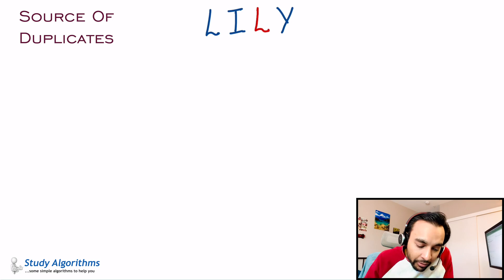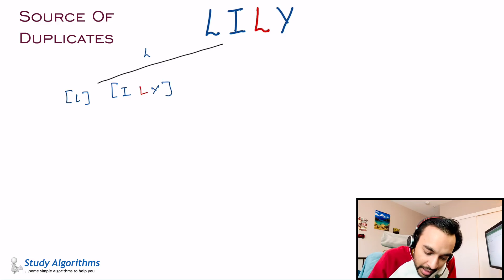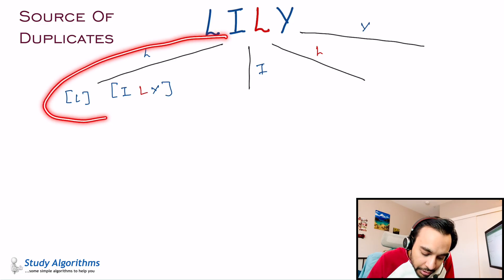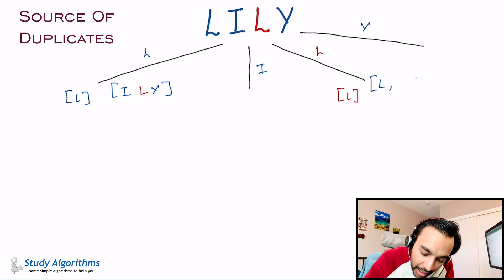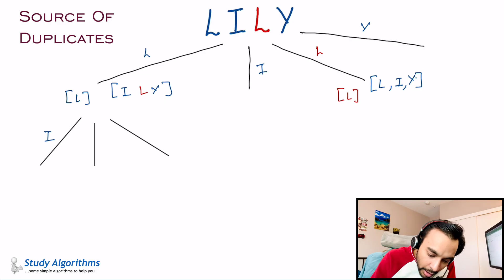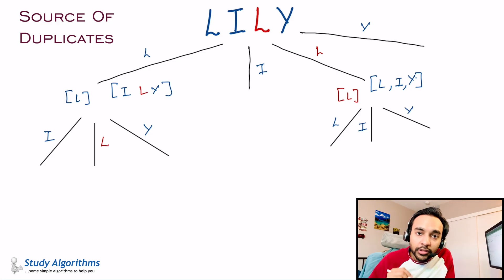If you approach this problem in the same way, you are going to select one of the characters. Let us say you selected L, then you will get L in your string and then you can choose from either I, or the second L, or Y. Similarly, you could choose the letter I or you could choose the second letter L, and then you would backtrack once again and choose the letter Y. Let us focus on these two scenarios: when I am choosing the first letter L and when I am choosing the duplicate letter L. When I choose the duplicate, I will once again get L in my string and have a choice of the first L, I, or Y.